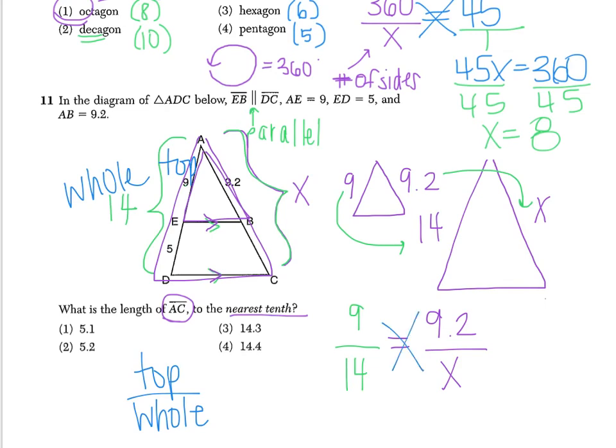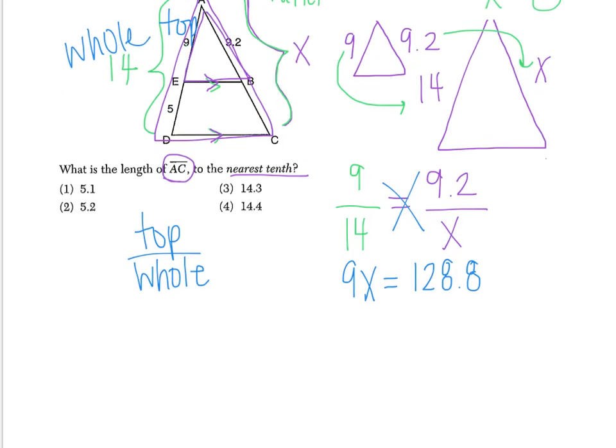We're going to cross multiply to solve. So now I have 9X equals 14 times 9.2 gives me a value of 128.8. Our next step is to divide by 9. So now X equals 14.3111 and it keeps going on and on and on. But we're asked to round to the nearest tenth. So the 3 is my tenths place. Look to the right. 5 and above. Give it a shove. 4 below. Let it go. This 1 is telling me to let it go. So now I end up with X equals 14.3.